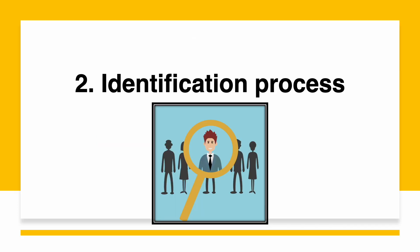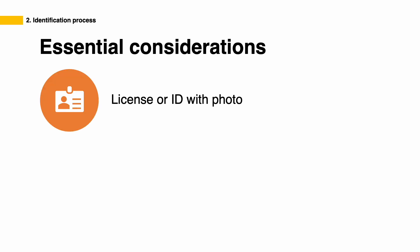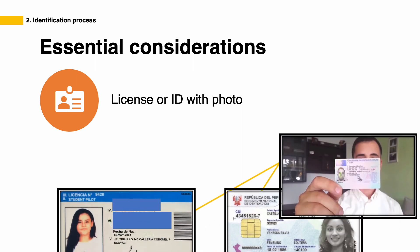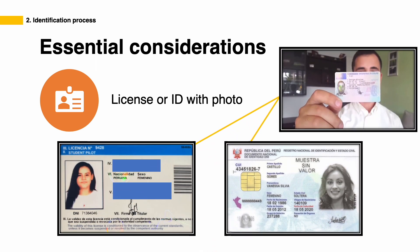Section 2: Identification process. On the day of your test, the inspector conducting the interview will verify your identity by asking for an ID card. So you need to have your aeronautical license at hand, or any other ID with a recent photo.